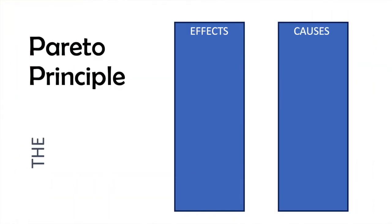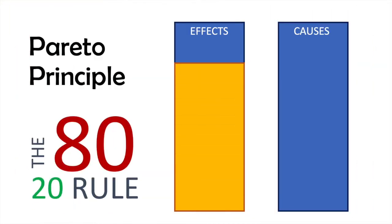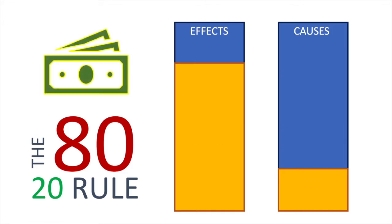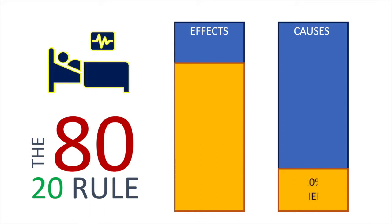Let's first start by talking about the Pareto principle. The Pareto principle states that 80% of the effects are due to 20% of the causes. Some real-world examples: in language, the most frequently used 20% of words account for 80% of word occurrences. In world income, the richest 20% of people have 80% of the world's total income. In healthcare in the US, 20% of patients use 80% of the healthcare resources.